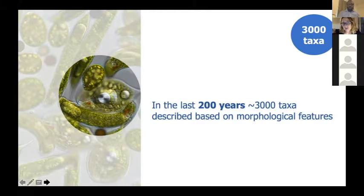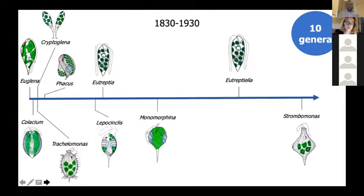There are 3,000 taxa described based on morphological features in the last 200 years, most of them described quite early. Most of the genera were described between 1830 and 1930. Those ten genera were described in the first 100 years of research on this group, many of them by Ehrenberg. So they are quite distinct based on morphology at the genus level.